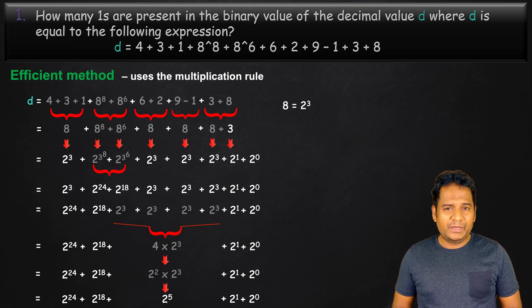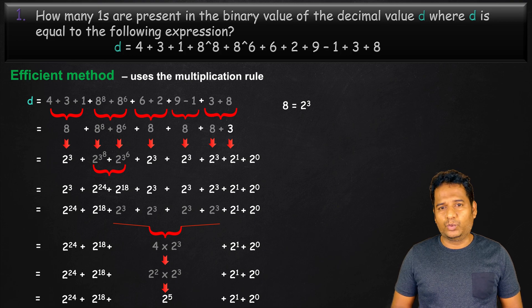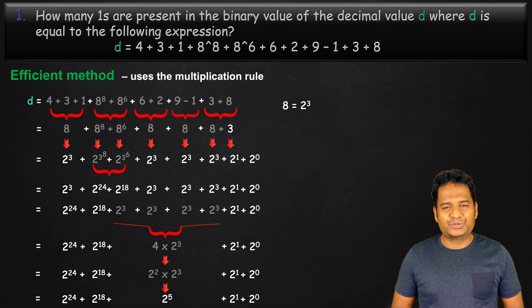Wherever there is a unique power of 2, we can add a 1. There are 5 unique powers of 2. Hence, the answer to this question is 5.